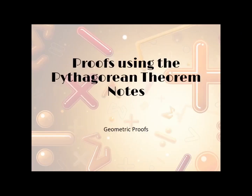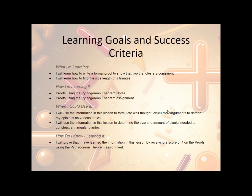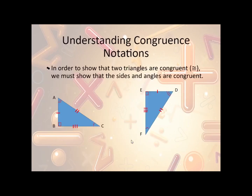Let's take a look now at the proofs using the Pythagorean theorem notes. The notes begin with the learning goals and success criteria. Now, understanding congruence: in order to show that two triangles are congruent, we must show that all the sides and all the angles are congruent. So first, we need to state the parts that are congruent.